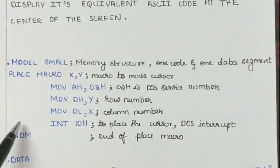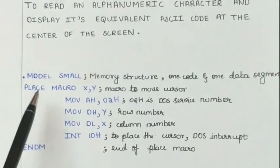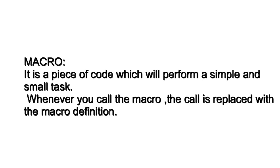In our program, we are going to use a macro. So, let us see what is a macro. A macro is nothing but a piece of code that is written to perform a simple or a small task. Whenever a macro is called, whatever is defined for that particular macro gets executed.